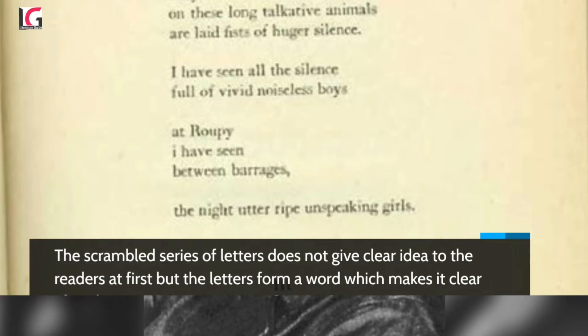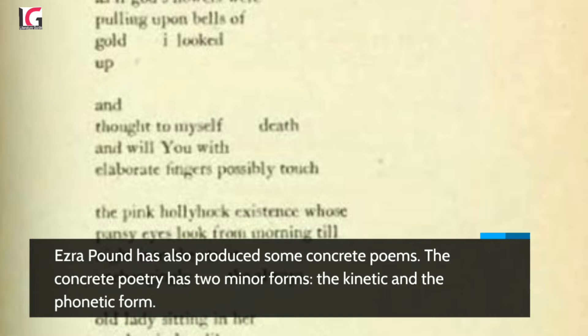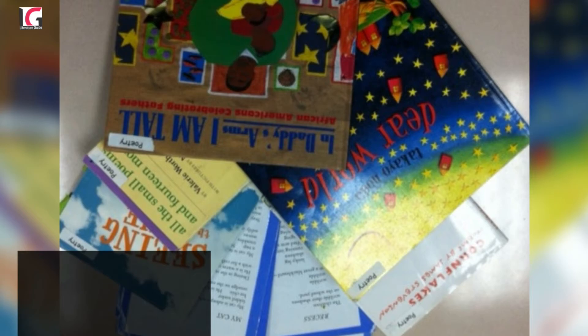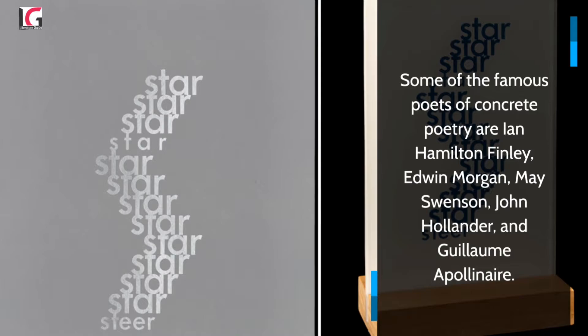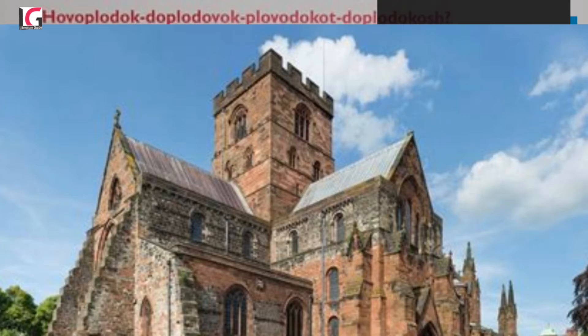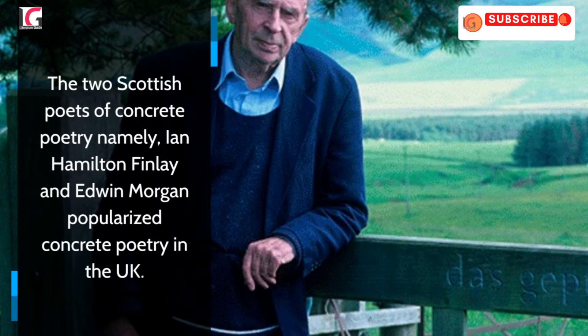Ezra Pound has also produced some concrete poems. Concrete poetry has two minor forms: the kinetic and the phonetic form. The drawings and photos employed by a poet make sense on turning the page — this is called the kinetic form. Some of the famous poets of concrete poetry are Ian Hamilton Finlay, Edwin Morgan, May Swenson, John Hollander, and Guillaume Apollinaire. The two Scottish poets, Ian Hamilton Finlay and Edwin Morgan, popularized concrete poetry in the UK.